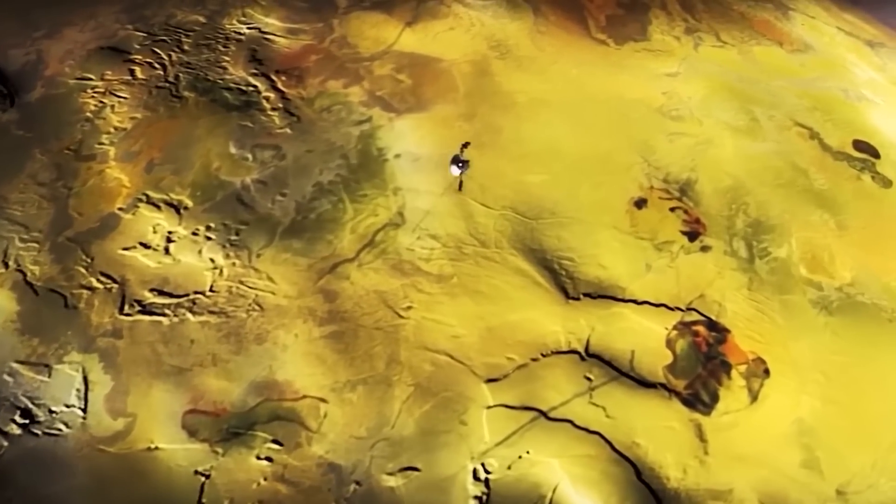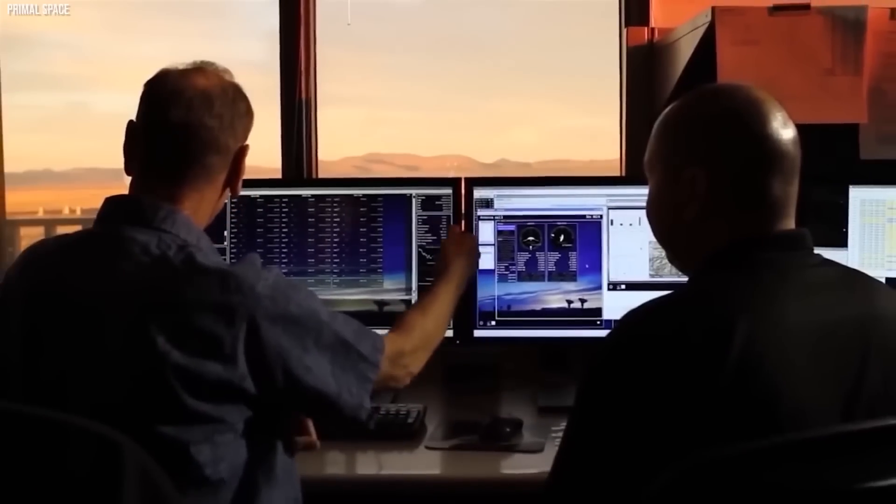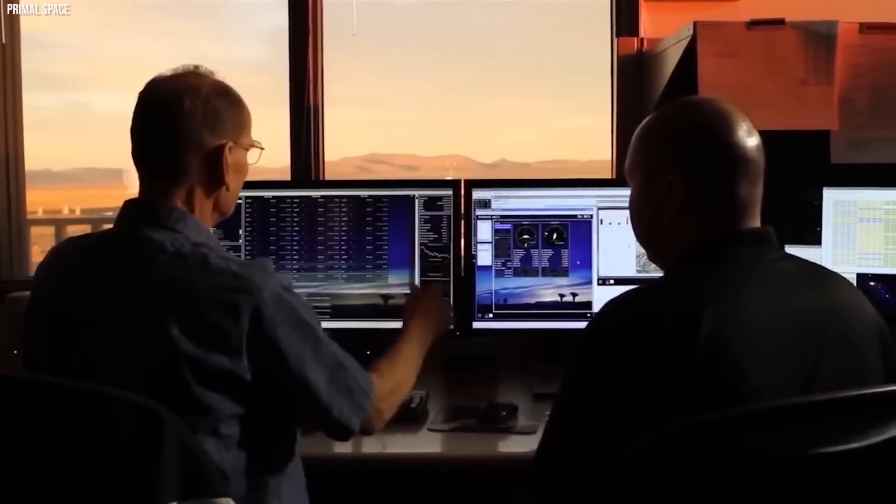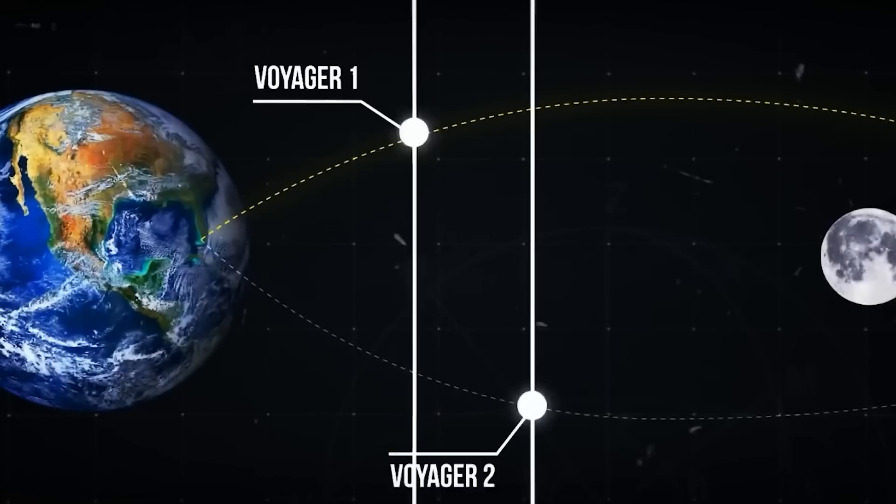Faced with such exceptional opportunity, NASA acted quickly, and just 15 days apart, they launched two identical spacecrafts, Voyager 1 and Voyager 2, in the summer of 1977.